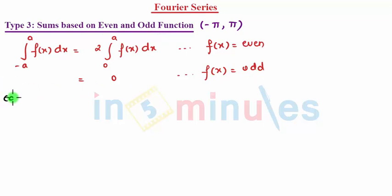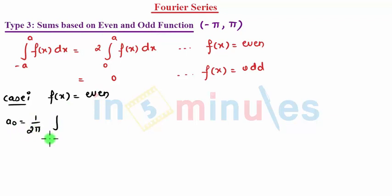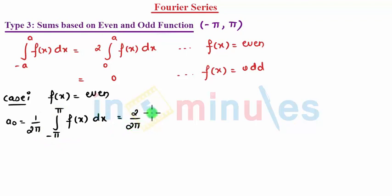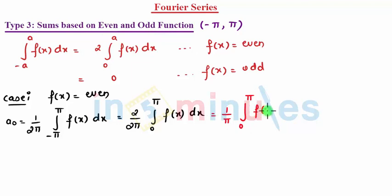Consider Case 1 where f(x) is even. The a0 formula is 1 upon 2pi times the integral from minus pi to pi of f(x) dx. Rather than integrating from minus pi to pi, I can integrate from 0 to pi by multiplying by 2, which gives me finally 1 upon pi times the integral from 0 to pi of f(x) dx.